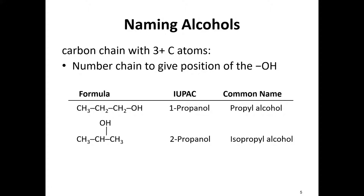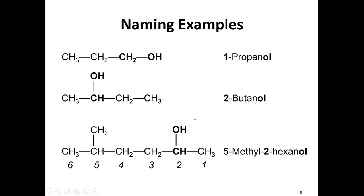There are some common names too. Isopropyl alcohol, also known as rubbing alcohol, is 2-propanol. We're always numbering from the end closest to the OH group — so this would be 1-propanol.